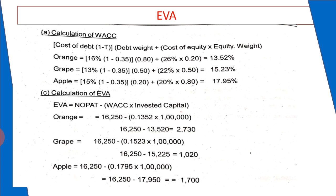The EVA of Orange company is highest at 2,730. Second position is company Grape at 1,025. In the case of company Apple, it is a negative figure: minus 1,700. Based on EVA, we can suggest that company Orange is in first position, then company Grape, and lastly company Apple. Company Apple is not recommended because it has a negative EVA.